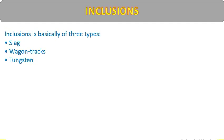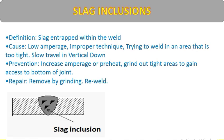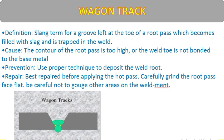Inclusions are of three types: slag inclusion, wagon track inclusion, and tungsten inclusion. Slag inclusion — slag is entrapped inside the weld. Cause: improper technique, low amperage, trying to weld in too tight an area, or slow travel speed. When the first bead is complete and you start the second pass, check for any slag inside and clean it before welding. Prevention: increase amperes; grind out tight areas to gain access to the bottom of the joint. Repair: remove by grinding or gouging, check by DPT, then re-weld.